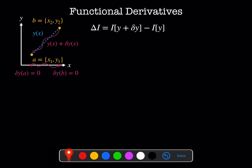Delta I is going to be I of y plus delta y minus I of y. If y of x minimizes I of y, then in the limit that delta y goes to 0, delta I is equal to 0.